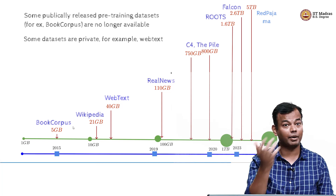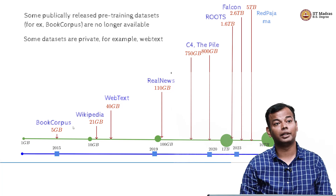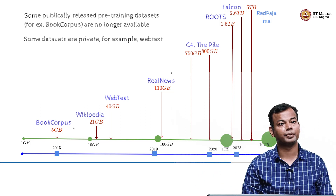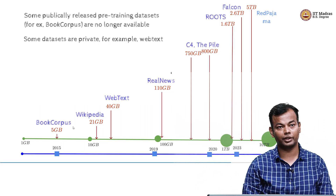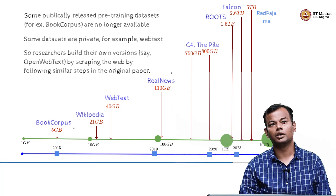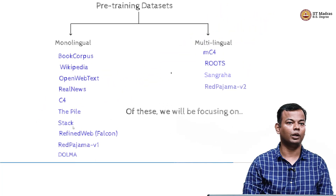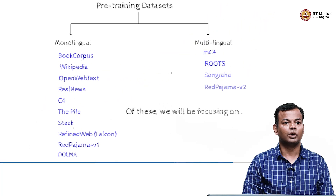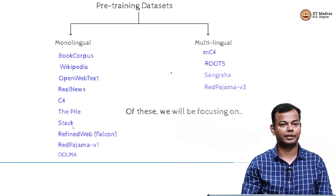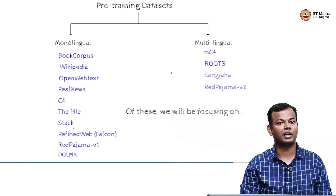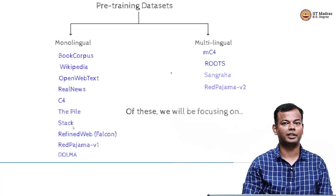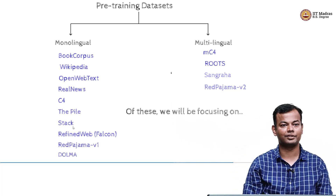Some of these are publicly available, and some which were earlier available like Book Corpus are no longer available, and some datasets are also private. Now if you look at these, we could roughly say that some of these are monolingual datasets and some of these are multilingual datasets.